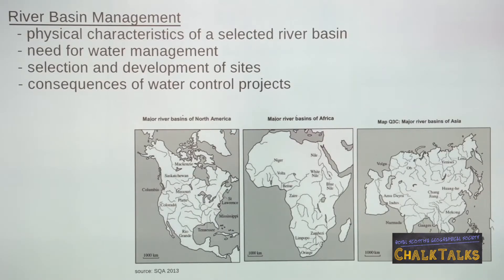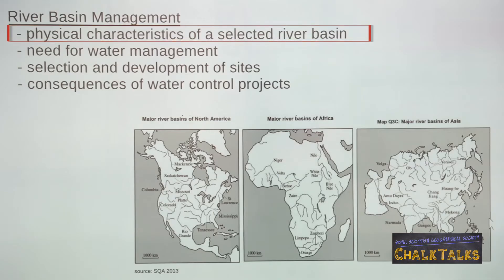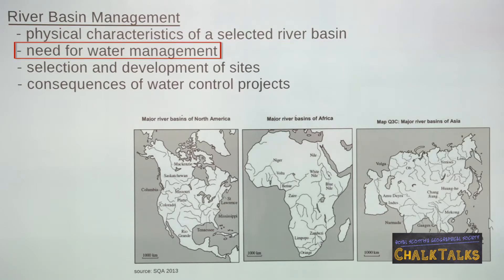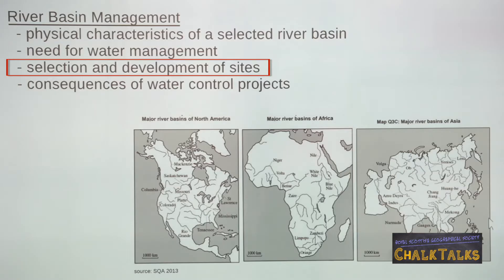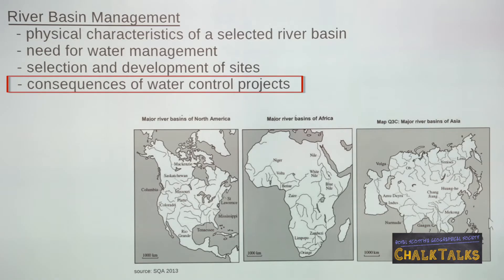There are four things you need to be able to do in this topic. First, you should have an understanding of the physical characteristics of a river basin you have studied in either North America, Africa or Asia. You should be able to explain the need for water management given physical and human characteristics of a river basin in general. Dams and reservoirs have certain site requirements, and you should be able to discuss what these are, covering both physical and human factors. You will have studied a water control project on your case study river, and you should be able to explain the social, economic and environmental consequences of this project — both positive and negative impacts.